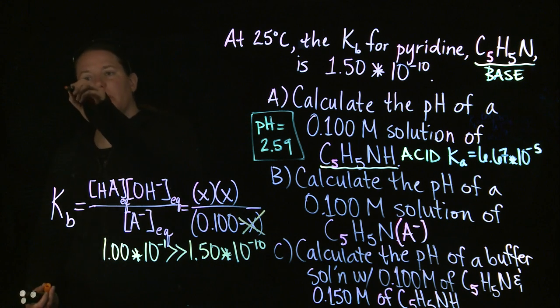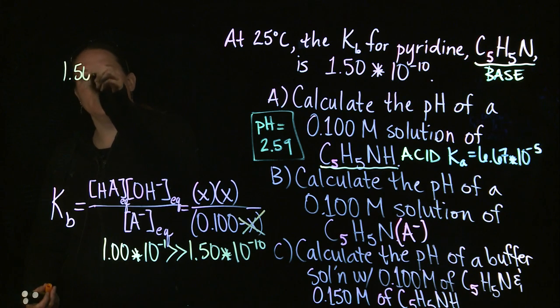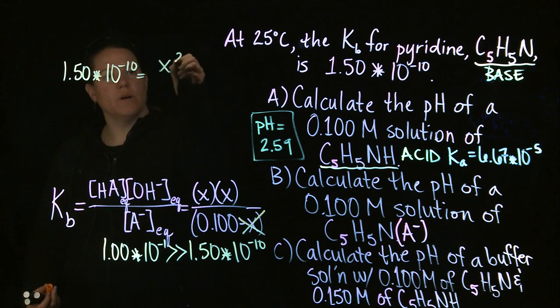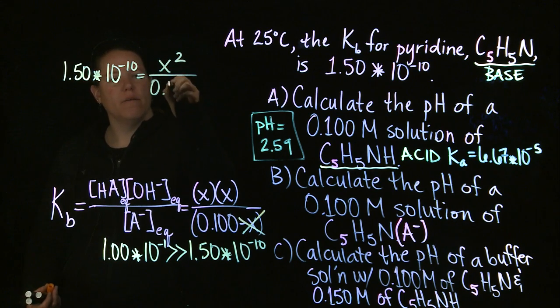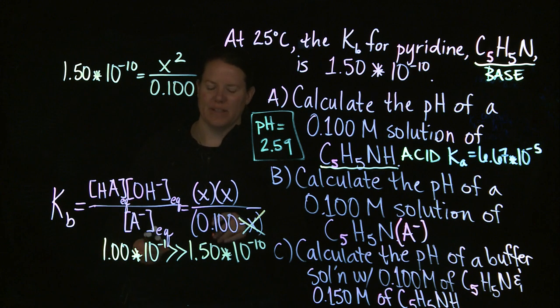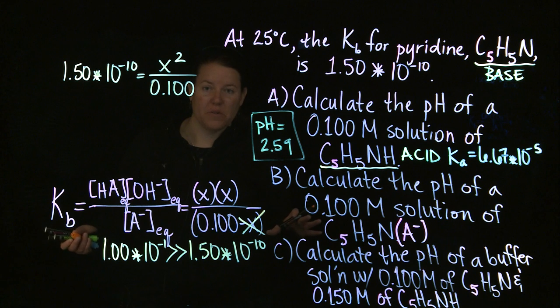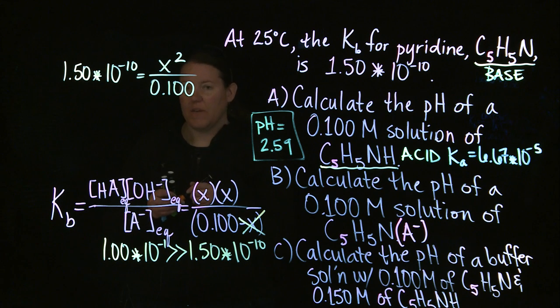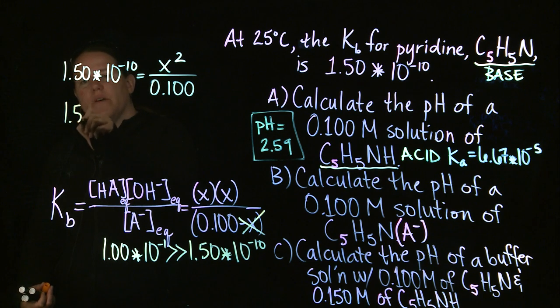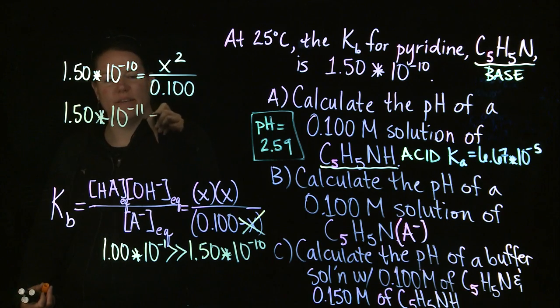And the assumption is to eliminate x from the denominator. And so what I'm going to have is I'm going to have 1.50 times 10 to the negative 10 equals x squared divided by 0.1. Life is so much better when you make the assumption. Although, I really like the quadratic equation. Don't get me wrong. So if you have to use it, it's not the end of your world. You multiply both sides by 0.1. You get 1.50 times 10 to the negative 11th equals x squared.